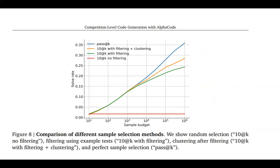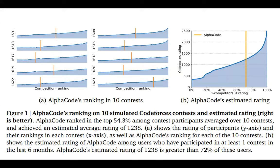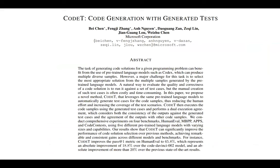With these two methods they got much higher scores. AlphaCode won over 54% of people — they ran it against 10 different competition challenges — and at the time it was a groundbreaking result. It showed that these systems can be as good as a regular human competitor.